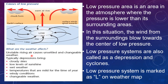The weather effects during a low pressure system include unstable rising air causing unsettled and changeable weather. These typical depressions bring cloudy skies, very low levels of sunshine, wet weather with rainfall, temperatures that are mild for the time of year, windy conditions, and frequently changeable weather.